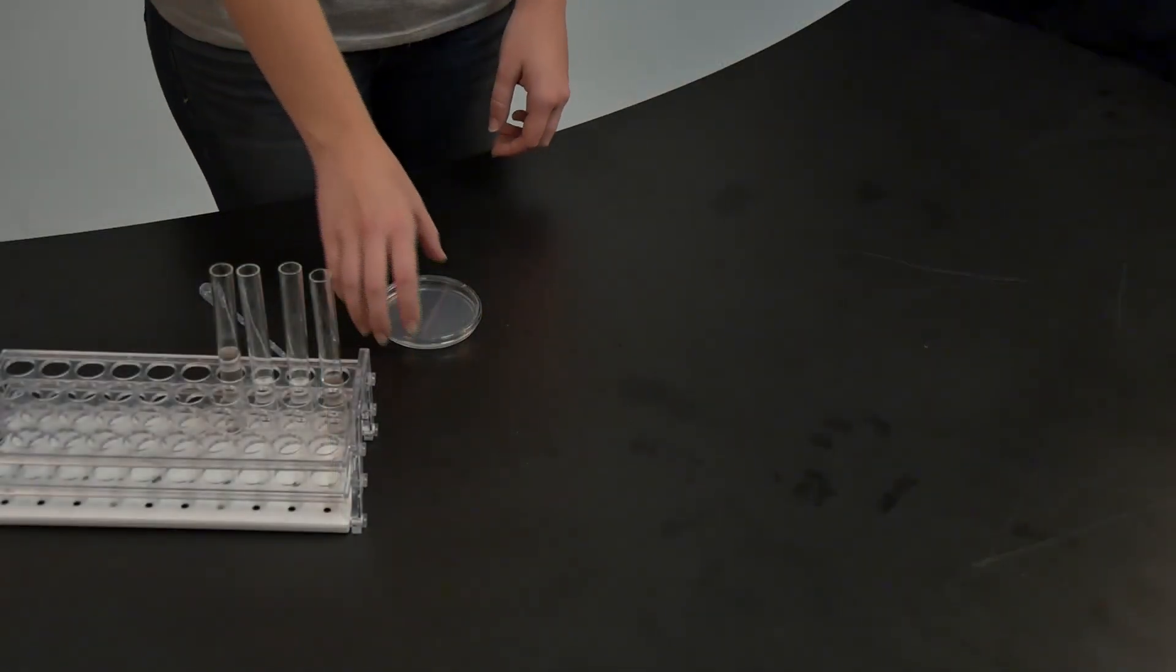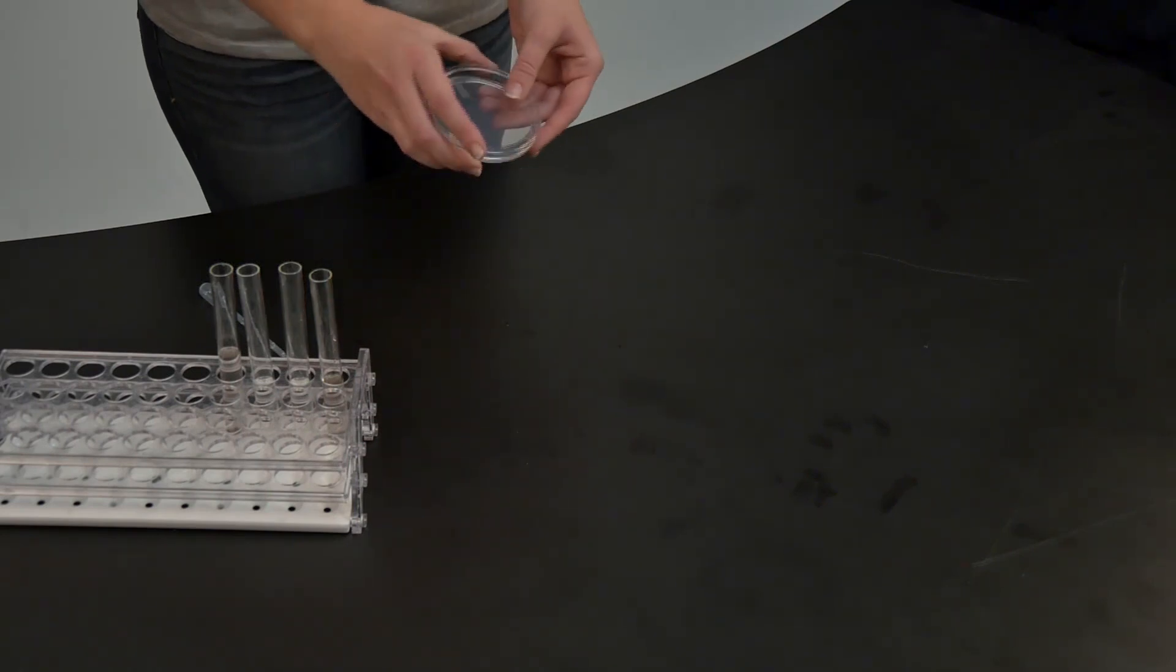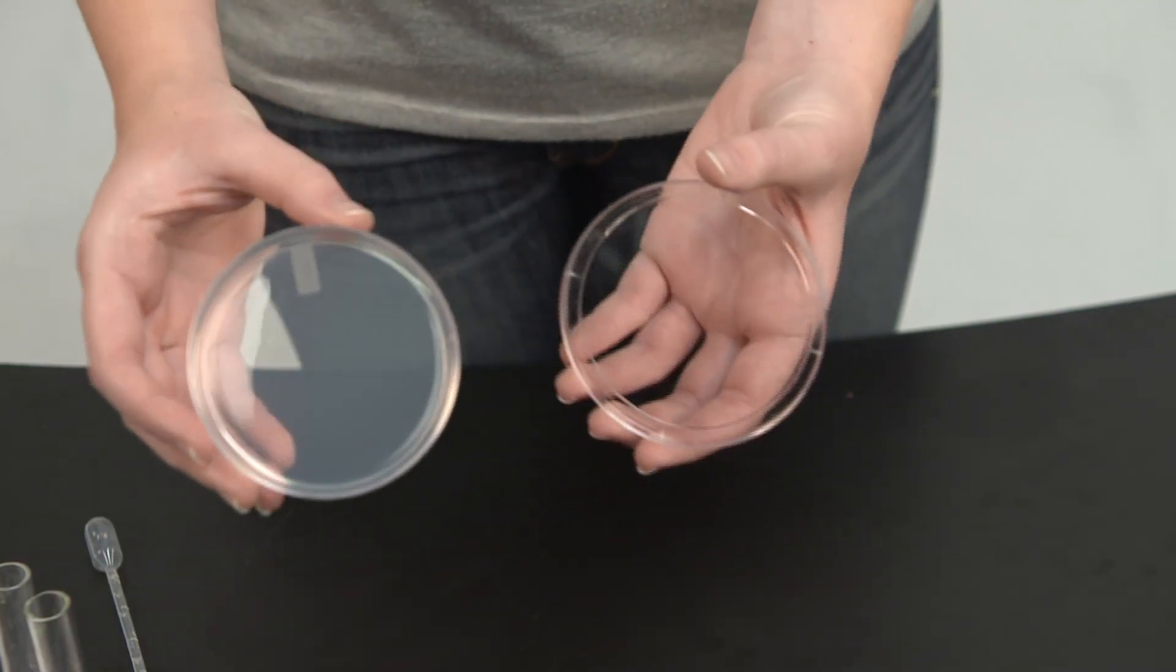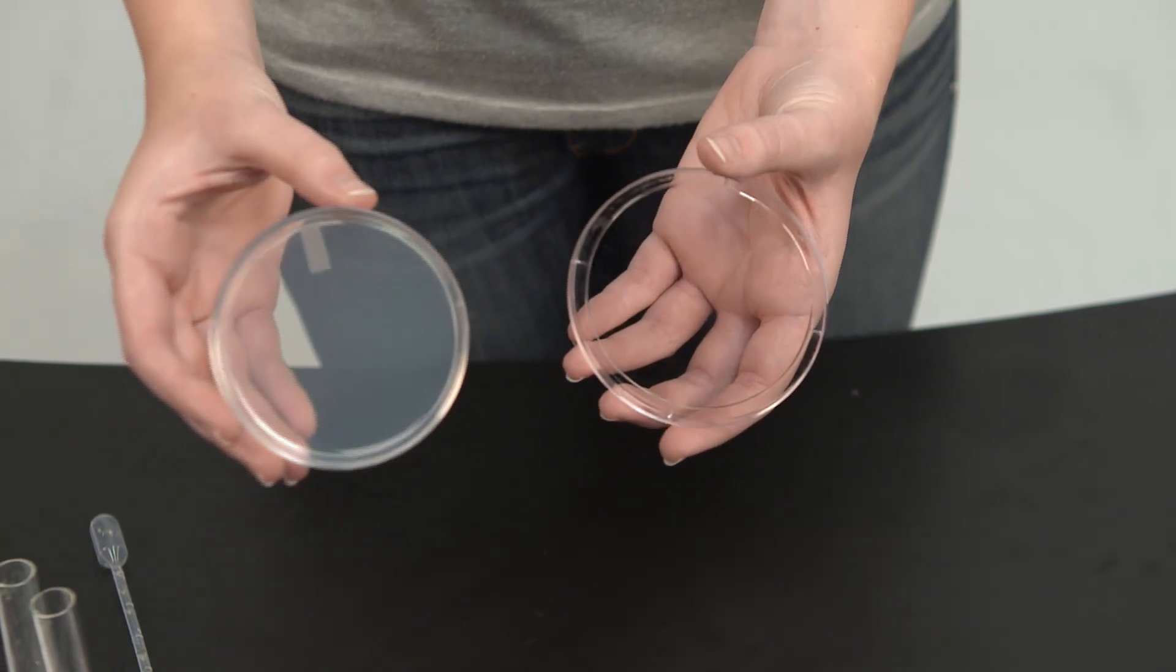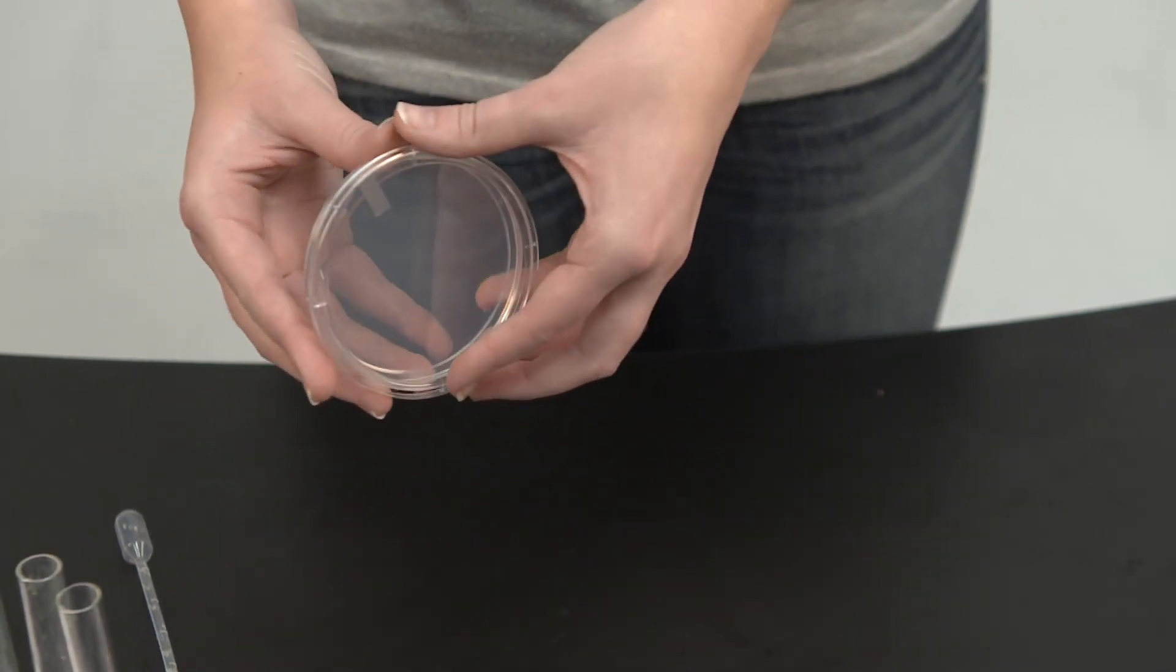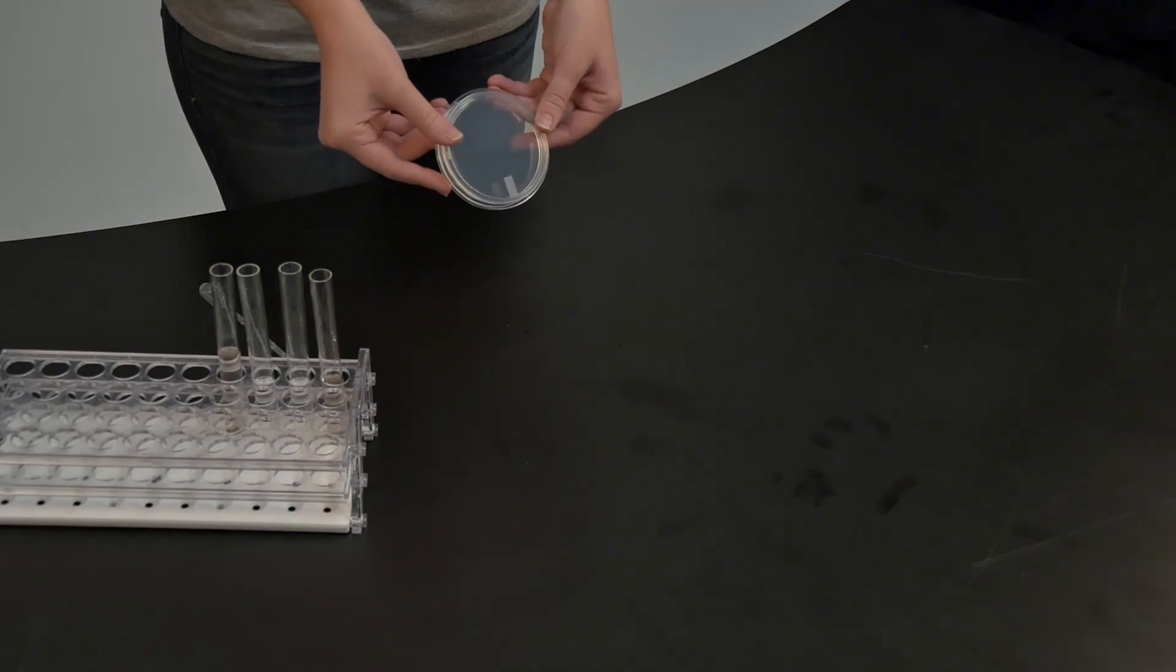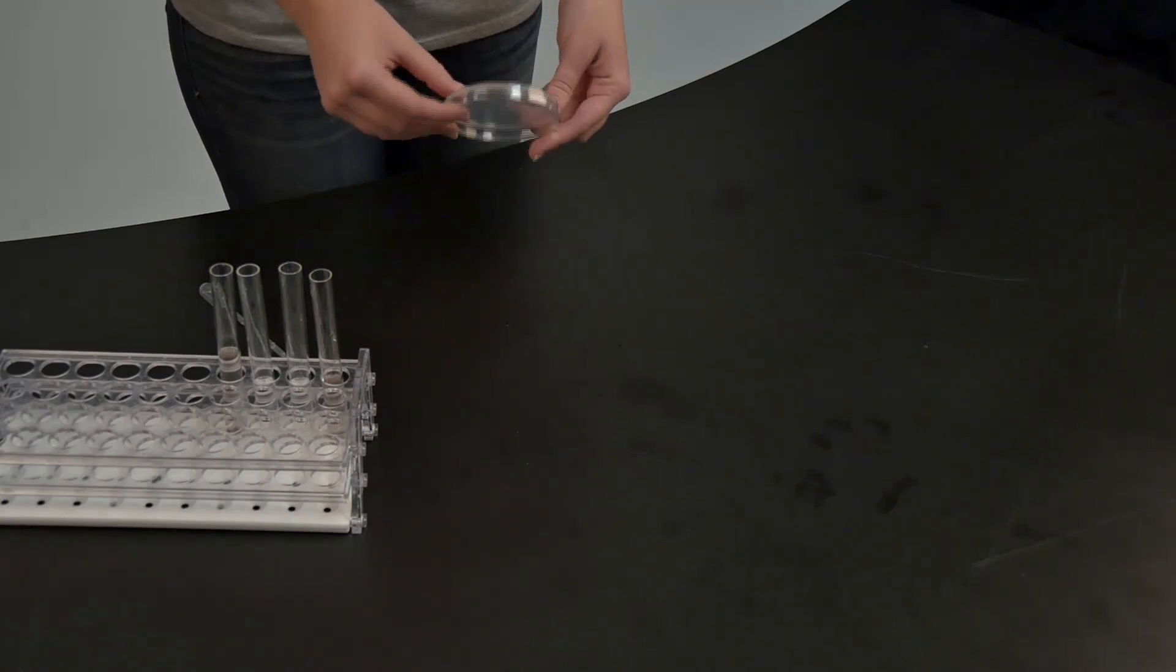The next step is to transfer this solution onto a petri plate. A petri plate is made up of two parts, the plastic lid and the bottom that contains the nutrients. Remember that bacteria need nutrients in order to grow. You'll want to make sure that the bacteria are spread on the bottom of the plate where the nutrients are found.